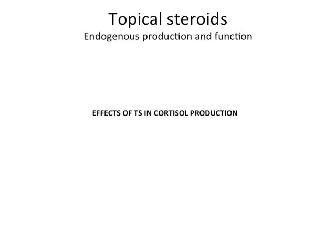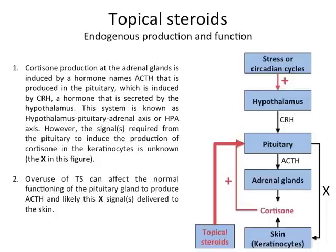Effects of topical steroids in cortisol production. Cortisol production at the adrenal glands is induced by a hormone named ACTH, which is produced in the pituitary, which in turn is induced by CRH, a hormone secreted by the hypothalamus. This system is known as the hypothalamus-pituitary-adrenal axis, or HPA axis. However, the signals required from the pituitary to induce the production of cortisone in the keratinocytes are not yet known, as marked in the figure with an X. Overuse of topical steroids can therefore affect the normal function of the pituitary gland to produce ACTH and likely these unknown signals delivered to the skin.